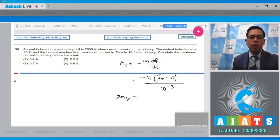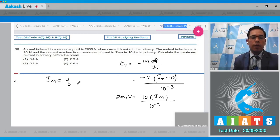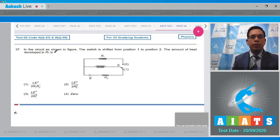Here, the EMF is given as 2000 volts, and it will be equal to 10 into I_m divided by 10^-3. After solving, we get I_m equal to 1/5 ampere. Hence, option number 3 will be the correct answer. Now move to question number 37.